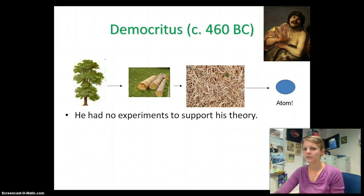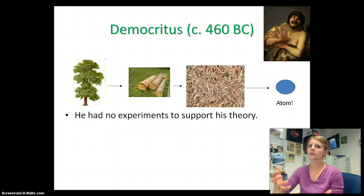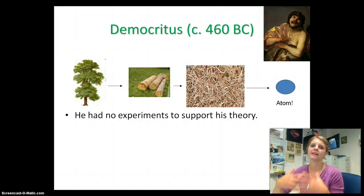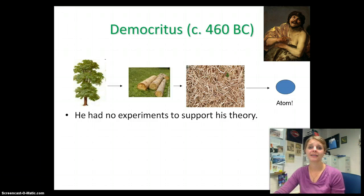He didn't do any experiments to support his theory. He just thought logically speaking — which kind of makes sense — there's got to be a point when you can't cut things in half anymore, and he called that the atom. Everything is built of these tiny atoms. That was Democritus' idea.